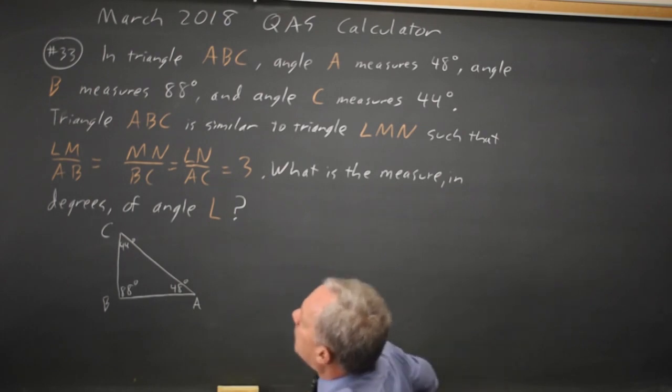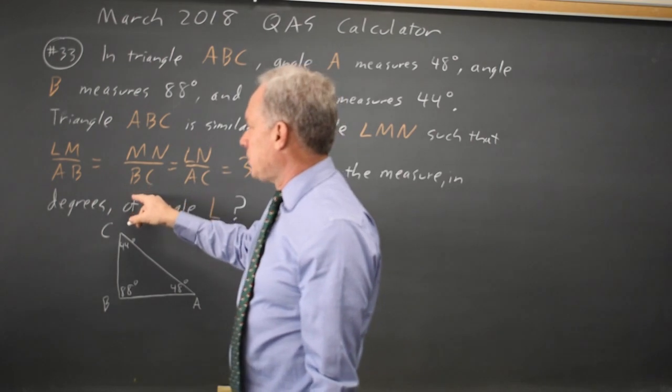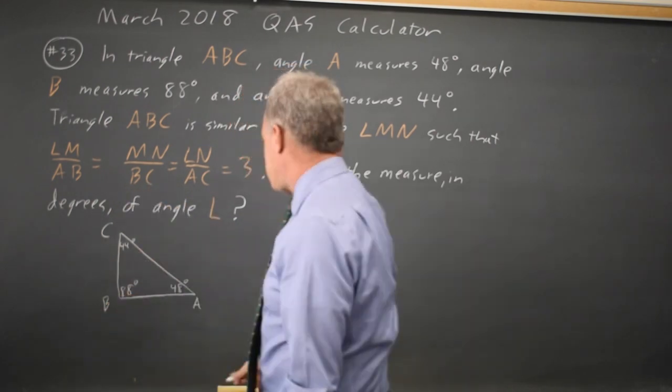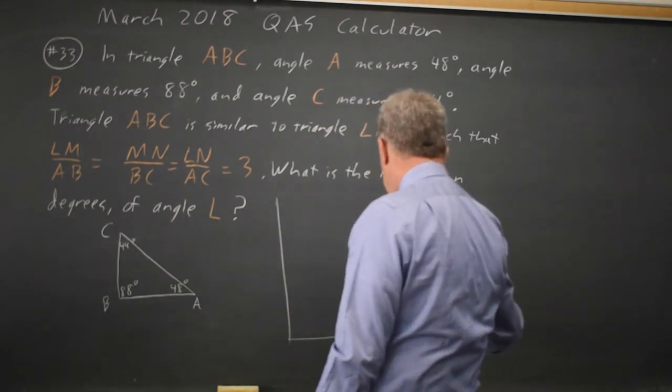And LM over AB equals MN over BC. So vertex M corresponds with vertex B in my larger triangle, which I won't make quite three times as big.